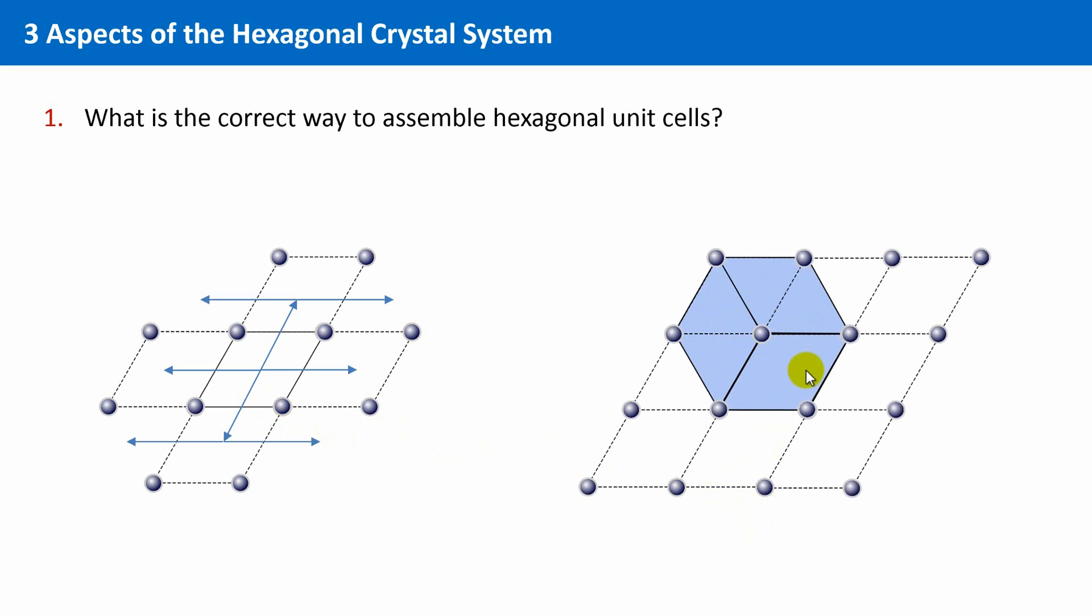One might think that it is composed of these three cells that are rotated and then assembled. But rotation is not allowed, it is against the translational principle. Instead, the hexagon is composed of these two complete primitive unit cells and two halves of these primitive cells.